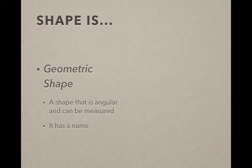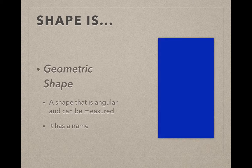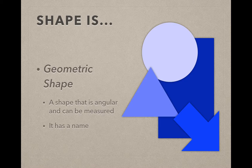We can have two different types of shape in our work. Geometric shape, which is a shape that's angular and can be measured. An easier way to think of that is it's a shape that has a name,